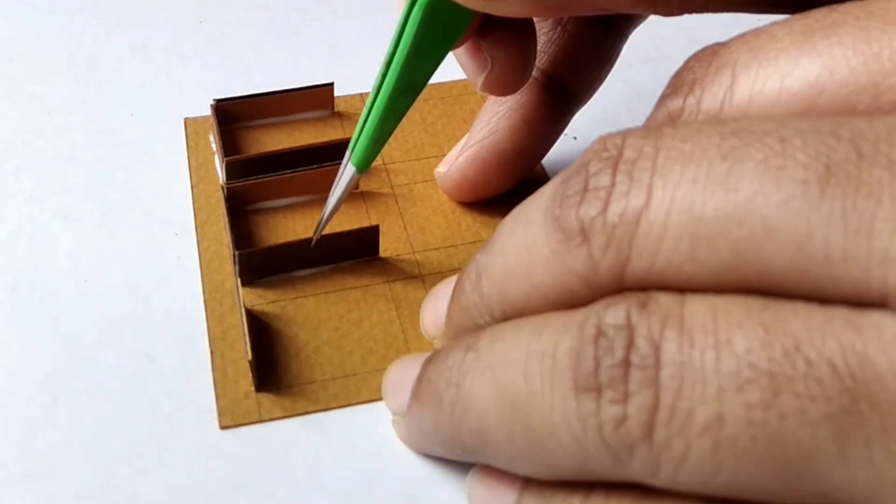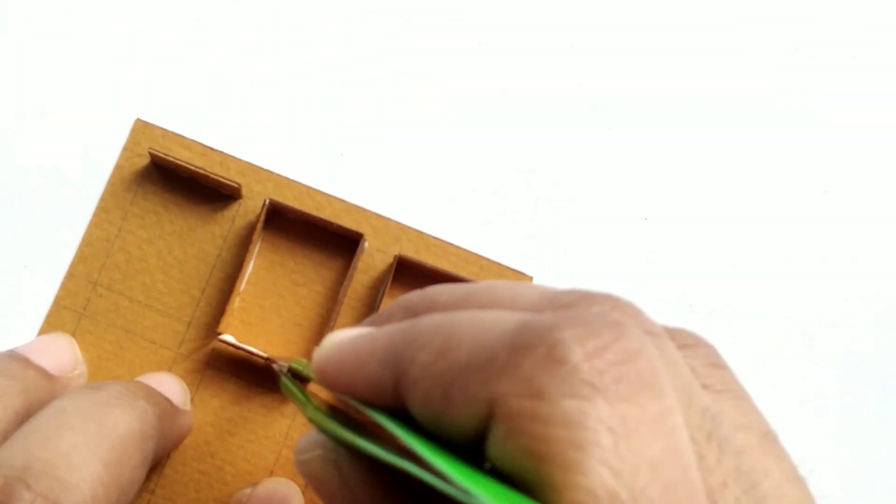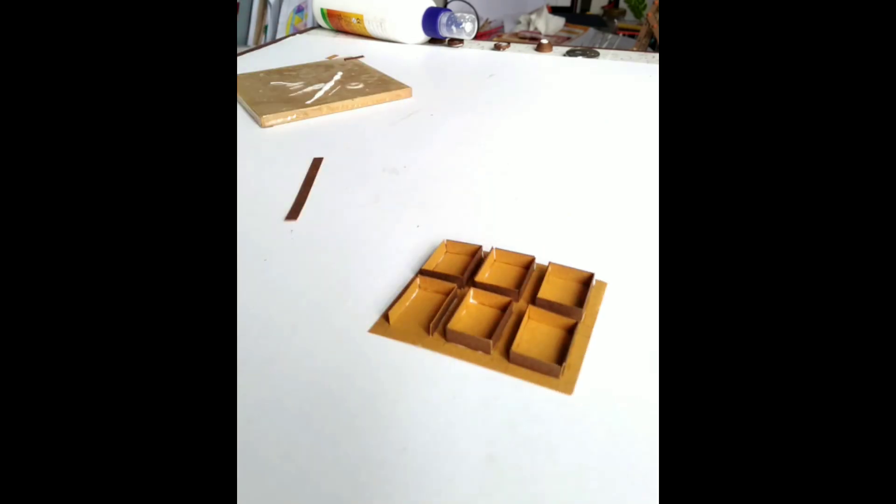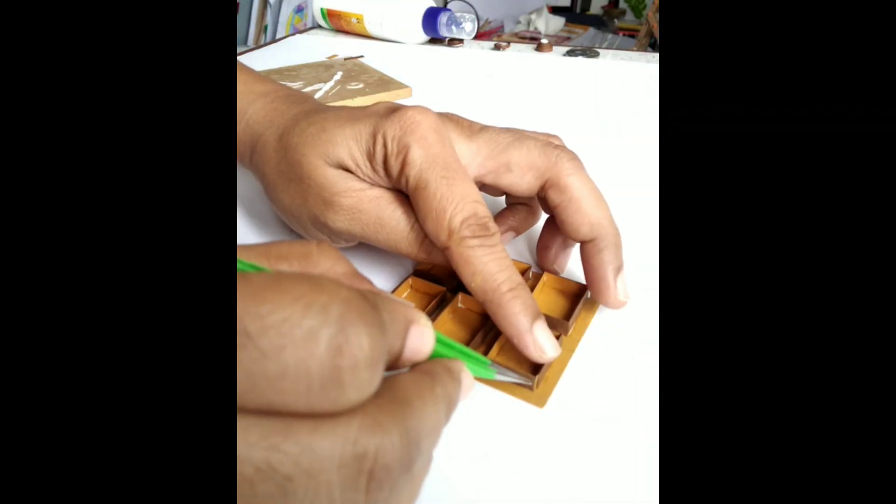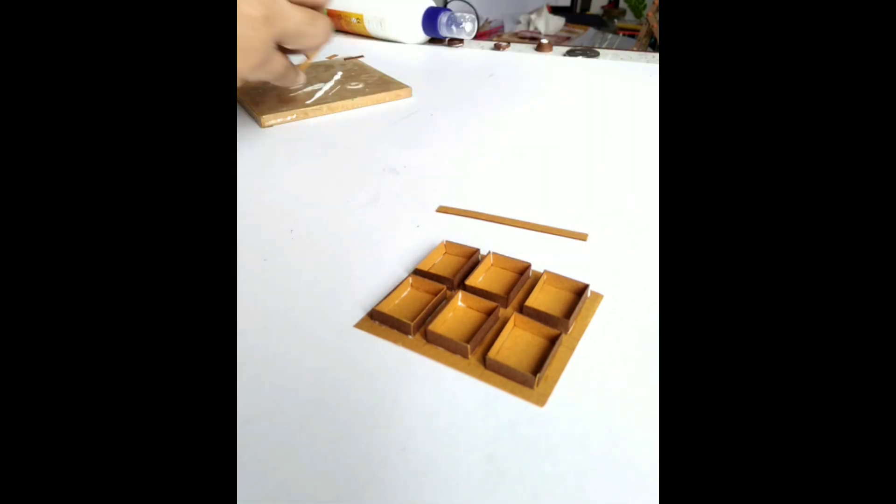My chocolate bar is going to have 6 chocolate pieces to it. I build each piece with dark brown color on the outside and light brown color on the inside. This creates a sense of depth for the chocolate bar.